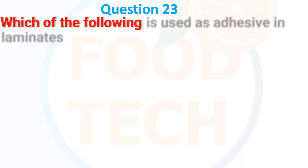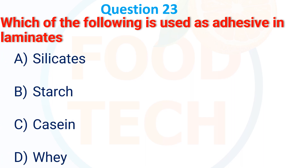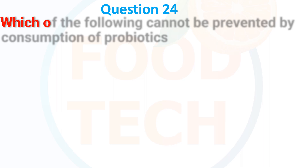Which of the following is used as an adhesive in laminate? A) silicates, B) starch, C) casein, D) varnish. The answer is C — casein.